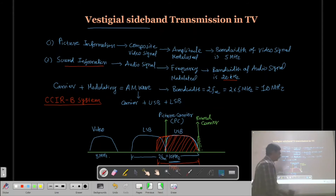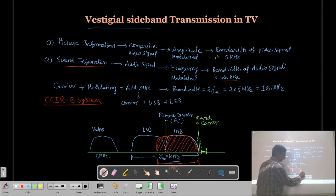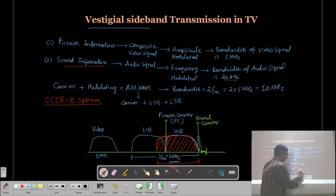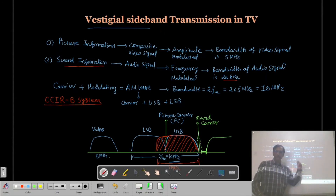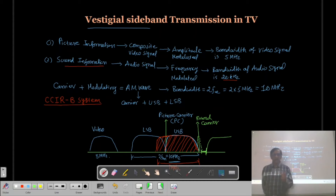After the sound carrier, in the frequency spectrum there is a gap where there is no information. This is known as a guard band. Then the next channel's information begins. So channel 1 is followed by the next channel, and then a third channel, and so on. In this way, the picture carrier frequency and the sound carrier frequency are introduced in a transmission.